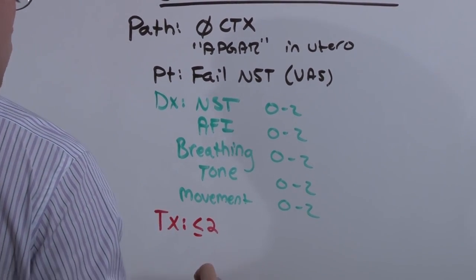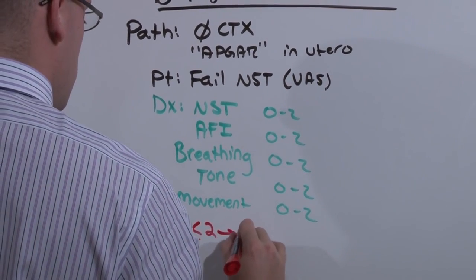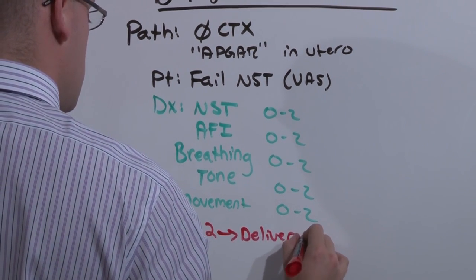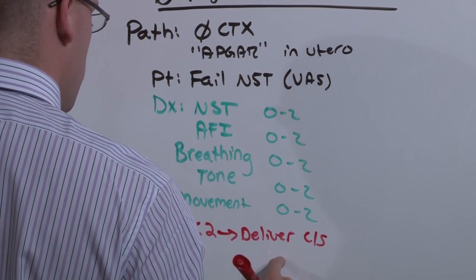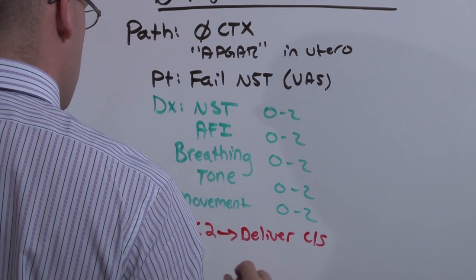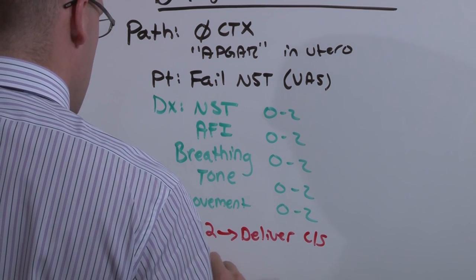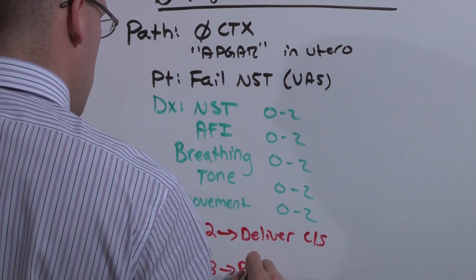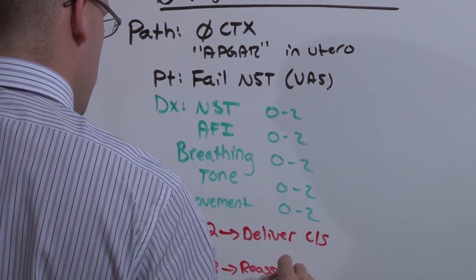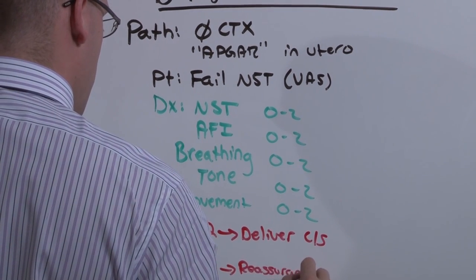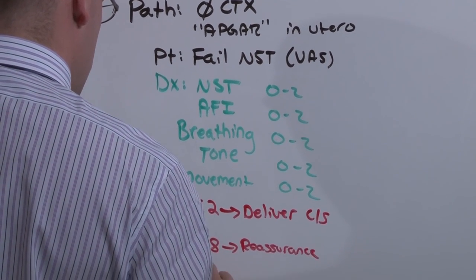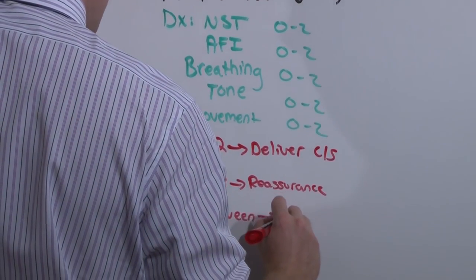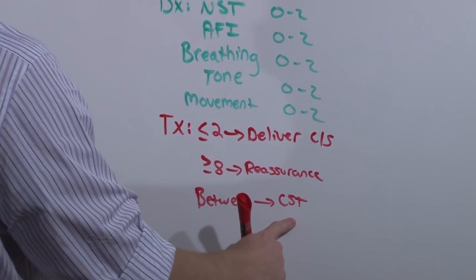If the BPP score is less than or equal to 2, you deliver — generally by C-section because contractions haven't even started yet and fetal demise is imminent. If greater than or equal to 8, baby is doing well and you give reassurance. If it's anything in between, you go on to the next step: the contraction stress test.